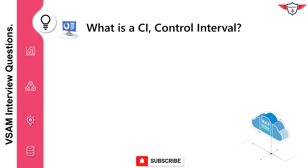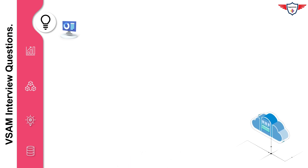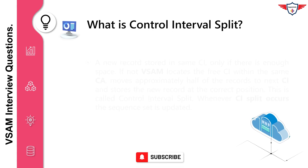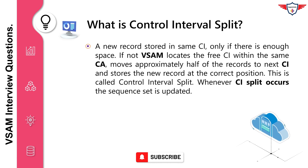What is a control interval (CI)? A control interval is the unit of information that VSAM transfers between virtual and auxiliary storage. What is a control interval split? A new record is stored in the same CI only if there is enough space. If not, VSAM locates the free CI within the same CA, moves approximately half of the records to the next CI, and stores the new record at the correct position. This is called a control interval split. Whenever a CI split occurs, the sequence set is updated.